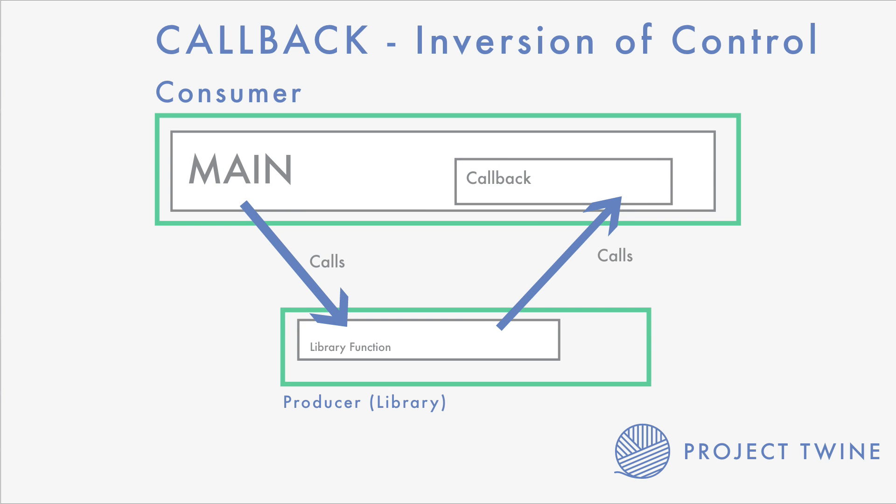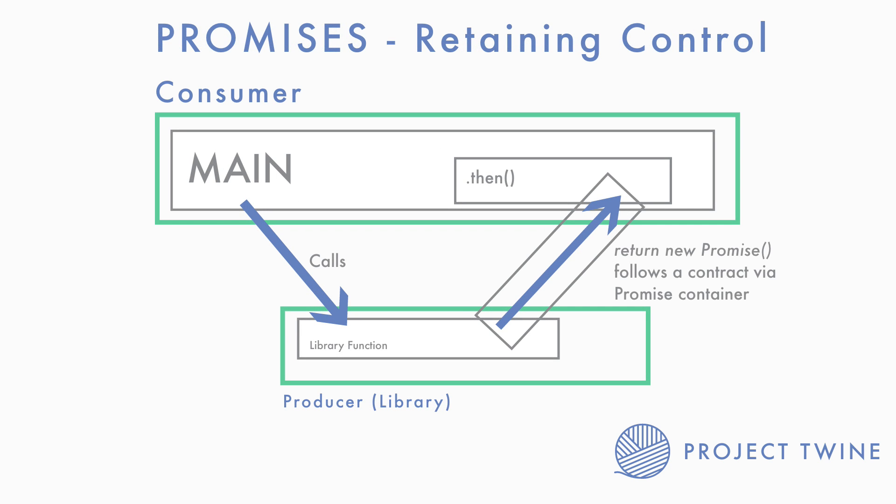So how do promises solve this problem? Promises serve as a container for a future value, and by doing that they're in a unique position to force these values to fulfill a sort of contract so that these sorts of problems don't happen. Furthermore, by using promises we can retain control instead of inverting it, because we expect the utility to give us event listeners called '.then' and '.catch', so instead of us feeding our callback to the utility, we expect them to give us these event listeners and we can come to expect a certain behavior.